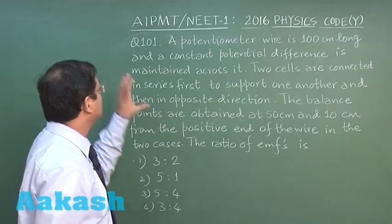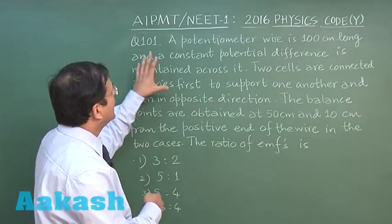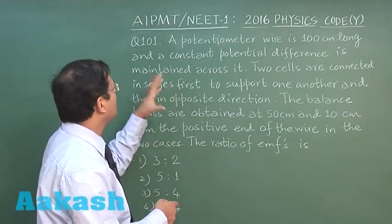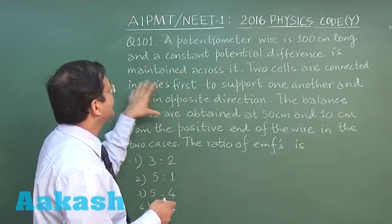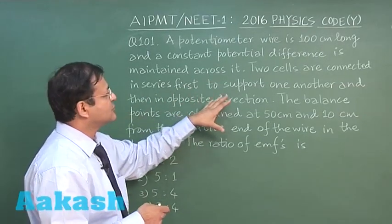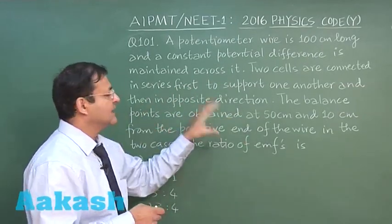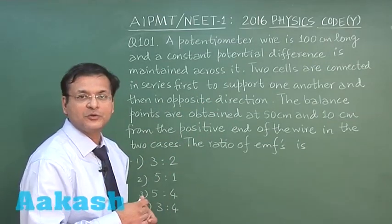Now in the next question, that is question 101, which is based on potentiometer, straightforward question. A potentiometer wire is 100 centimeter long, normally it happens to be, and a constant potential difference is maintained across it. Now two cells are connected in series first to support one another and then in opposite direction. So you have to find out the ratio of those EMFs.